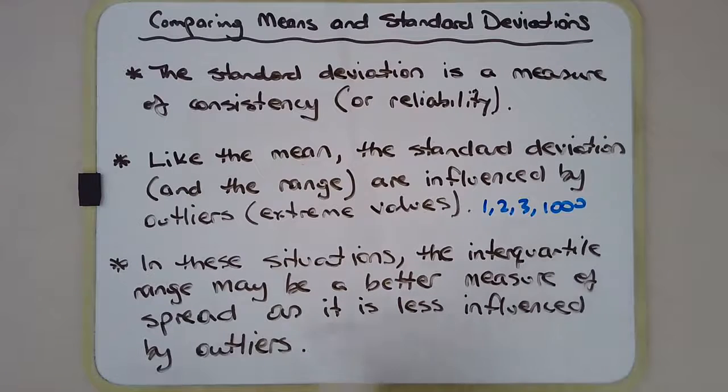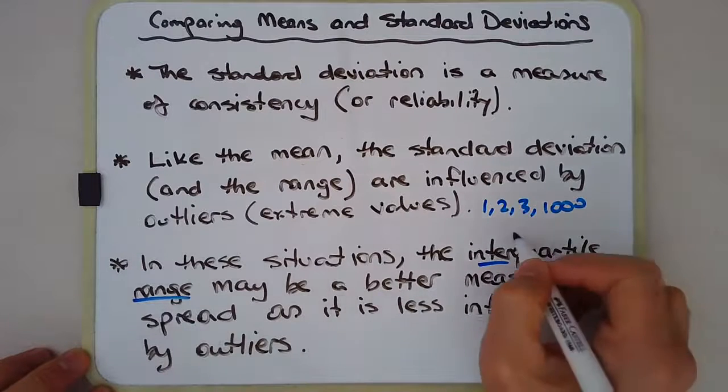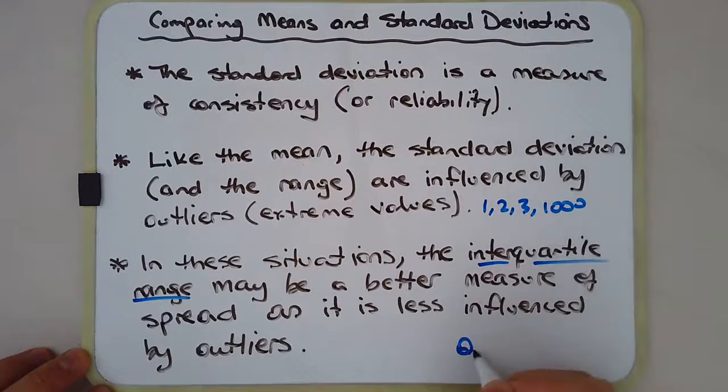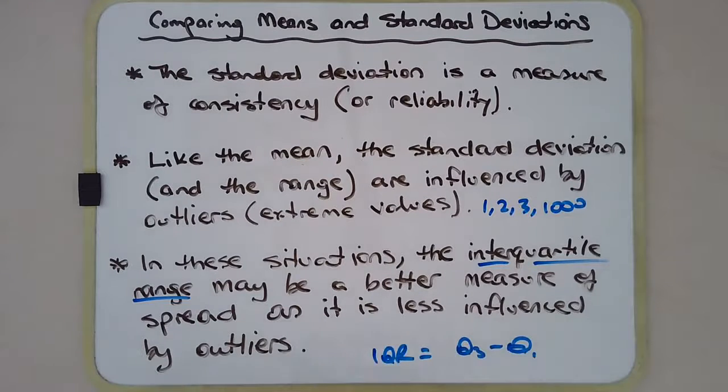In these situations, the interquartile range—remember that's Q3 minus Q1—may be a better measure of spread or consistency because outliers can cause some issues.